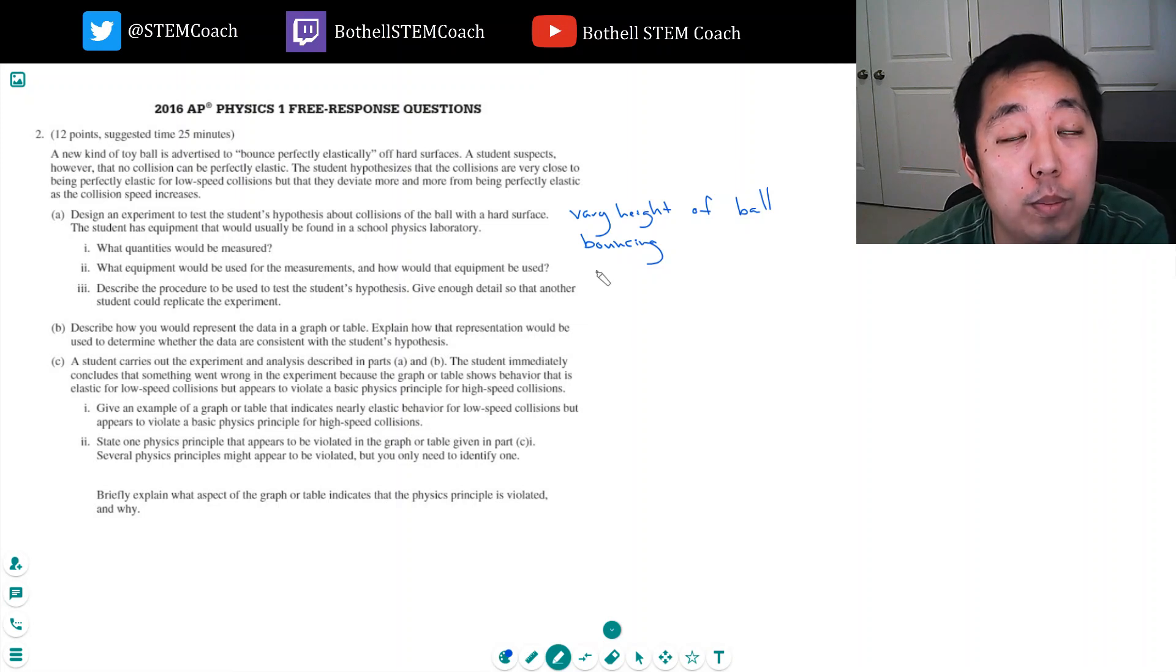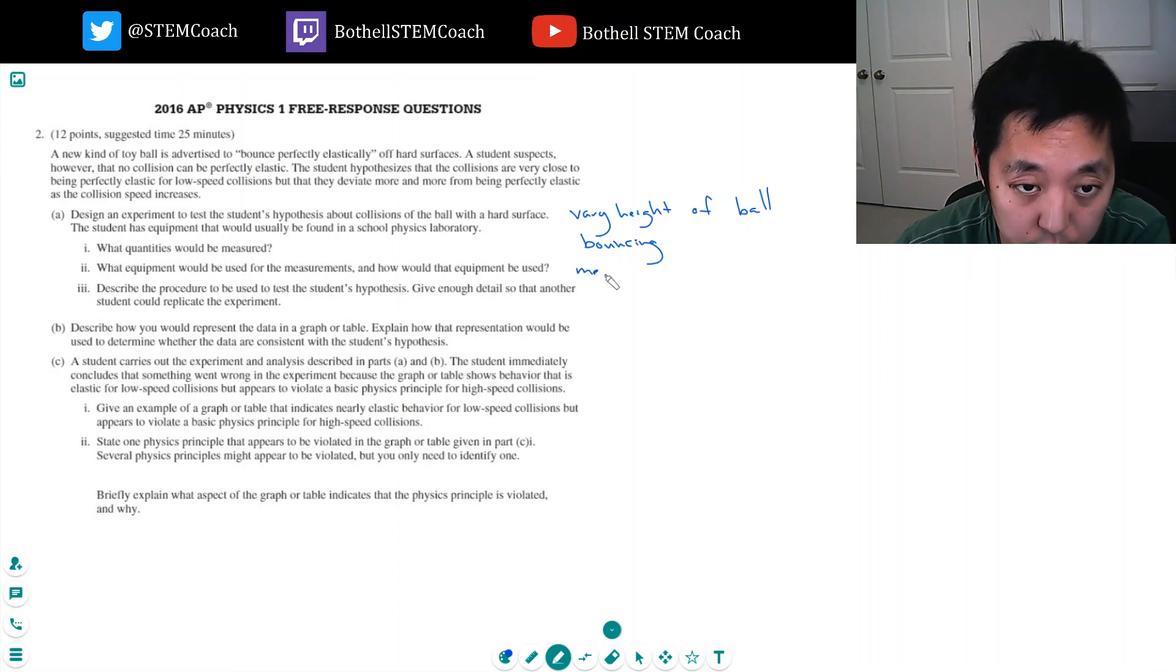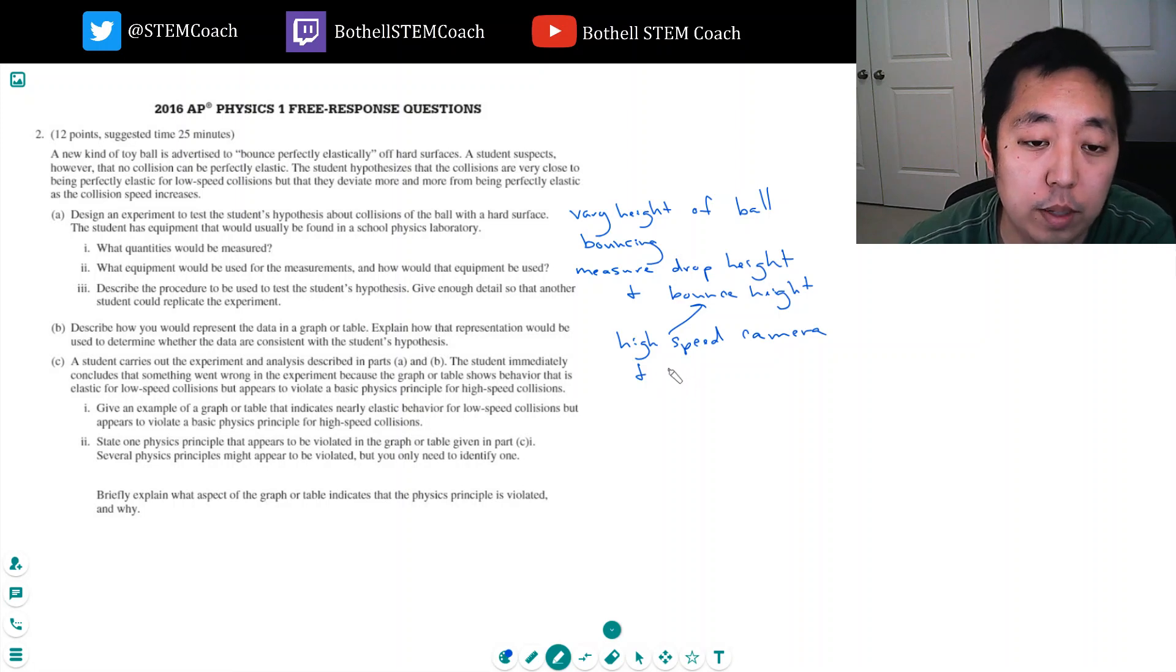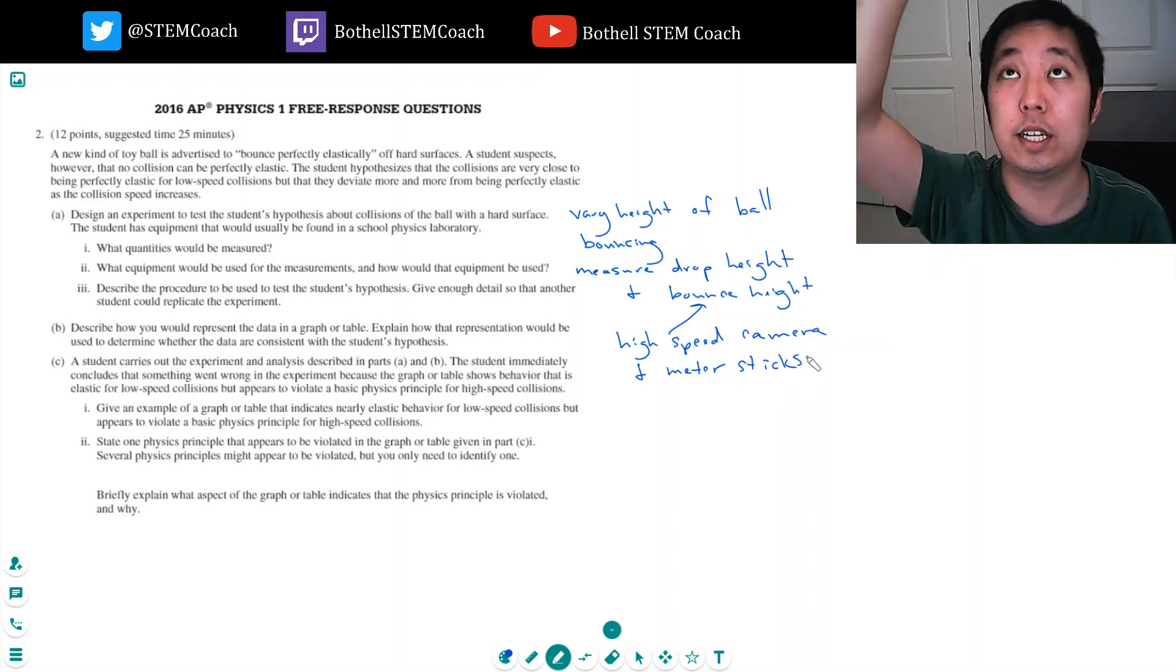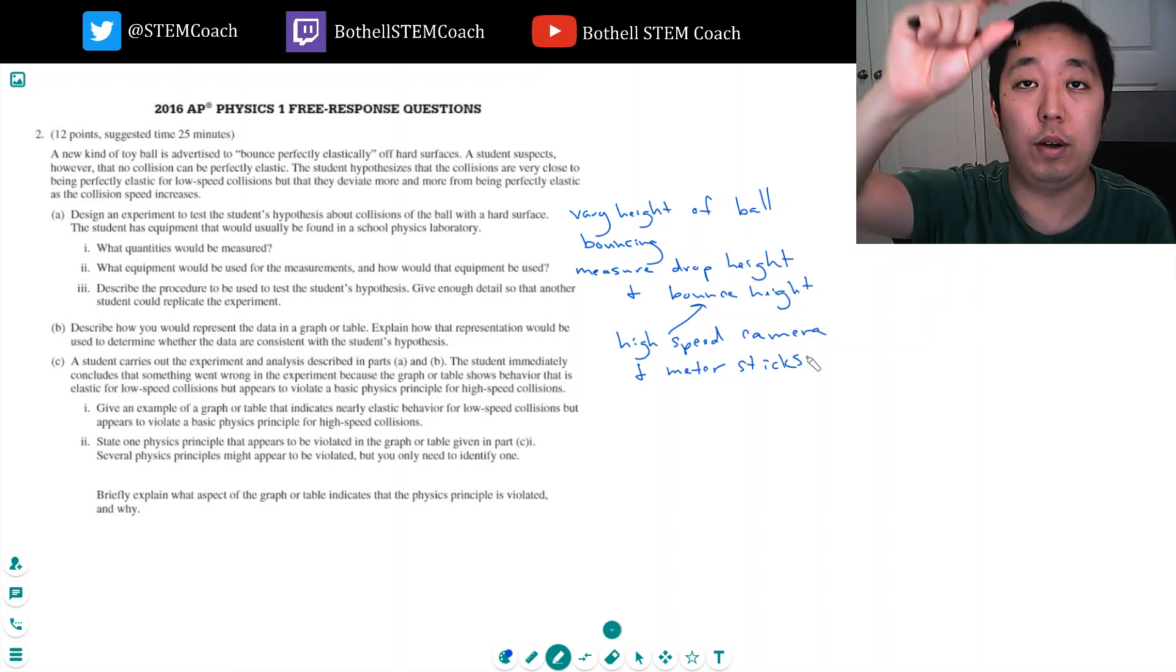So I would measure not only the height of the ball but the height of drop height and bounce height. To measure the bounce height I would use a high speed camera and a meter stick, or not meter sticks, just a measurement tape so you can kind of watch the ball go down and then see how high it bounces up.